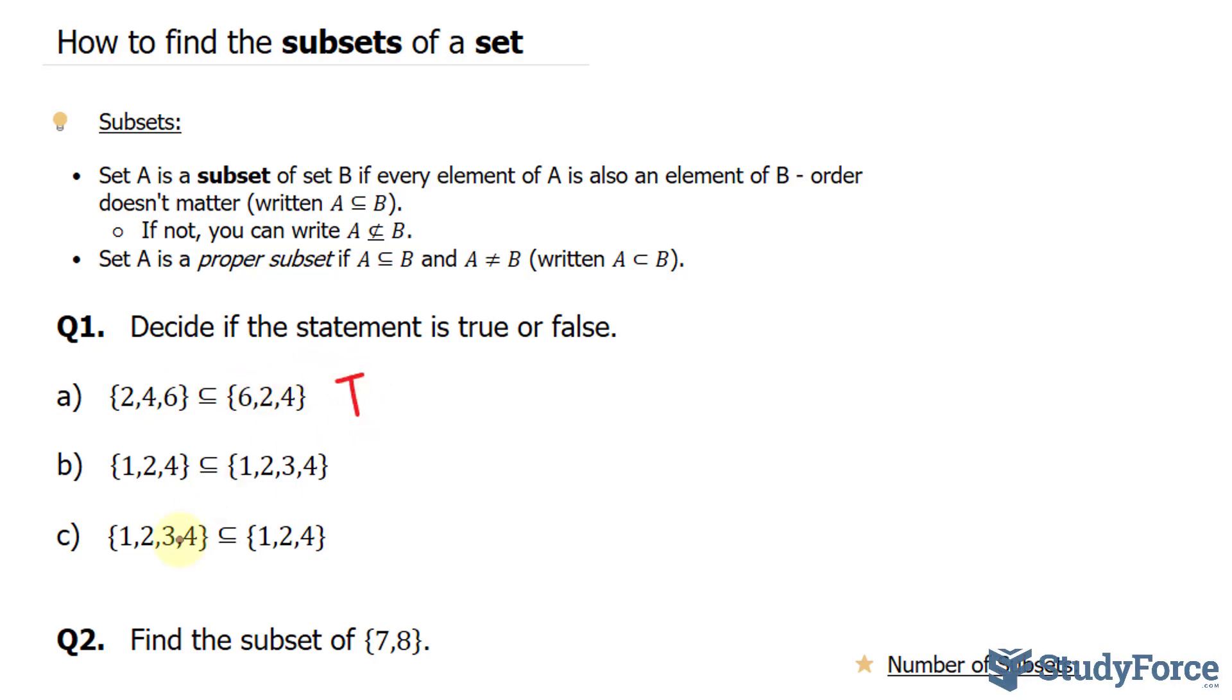In part B, we have 1, 2, and 4 in the first set. But in the second set, we have 1, 2, 3, and 4. Now because every element in the first set is found in the second, the first set is a subset of the second.